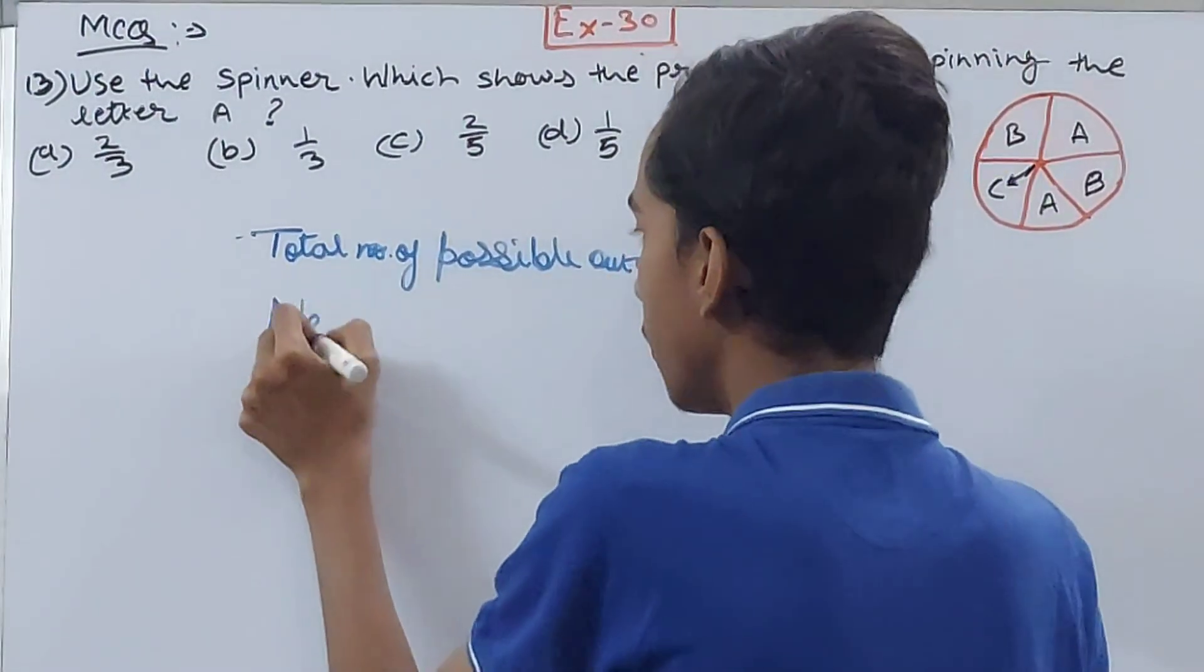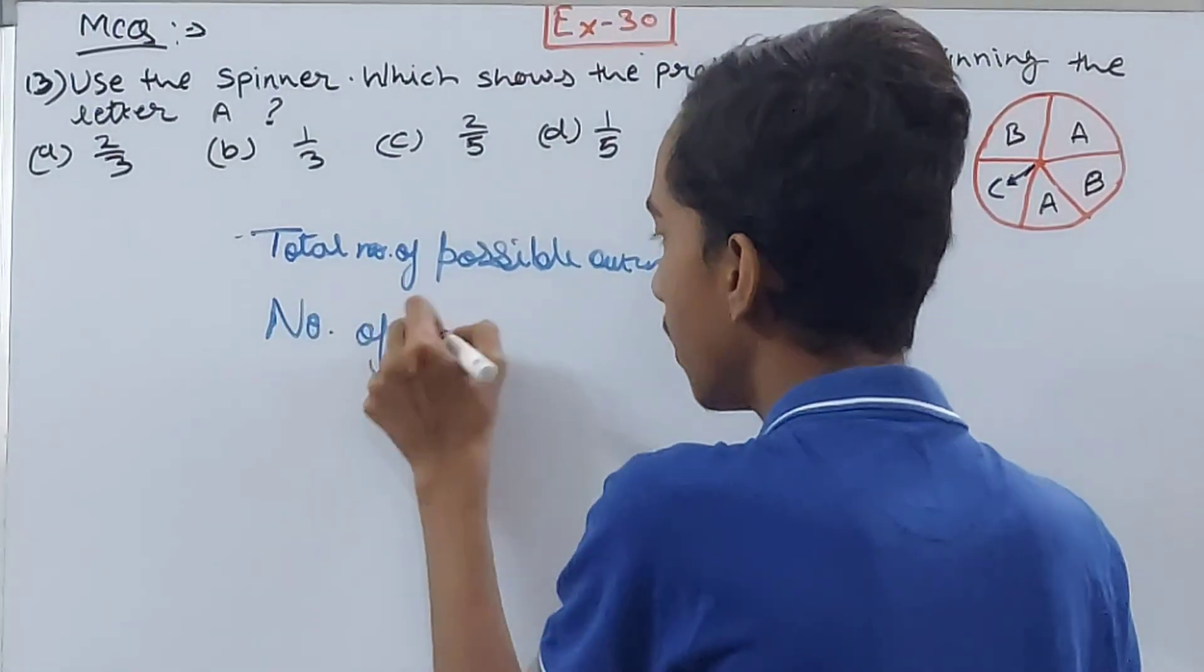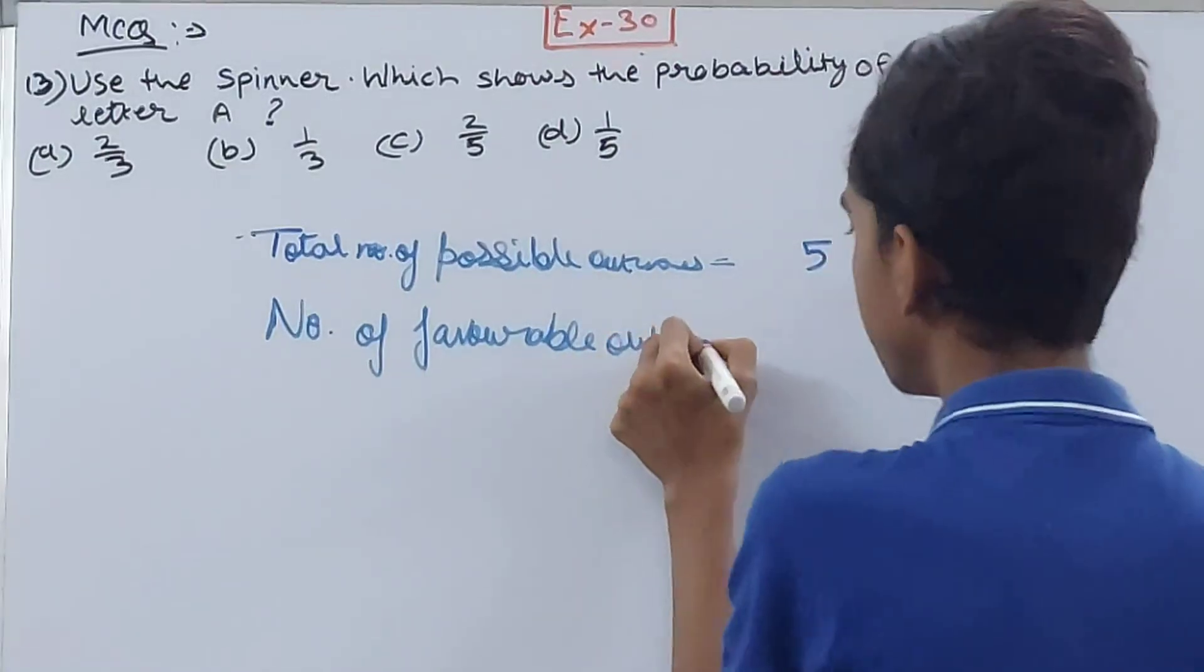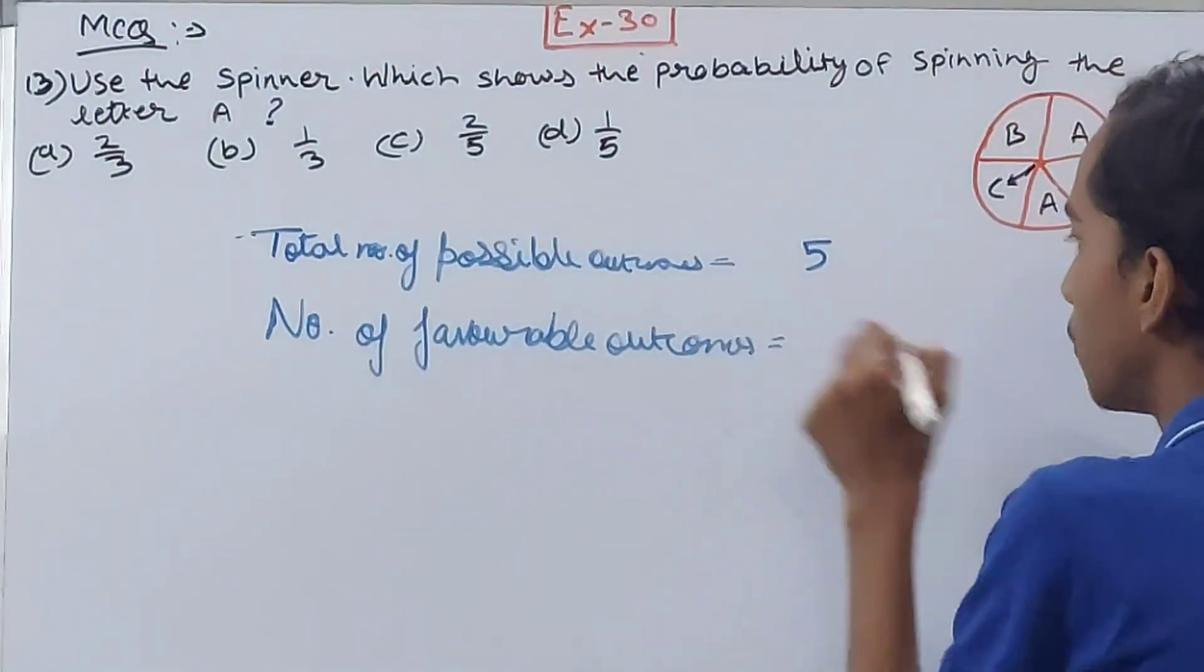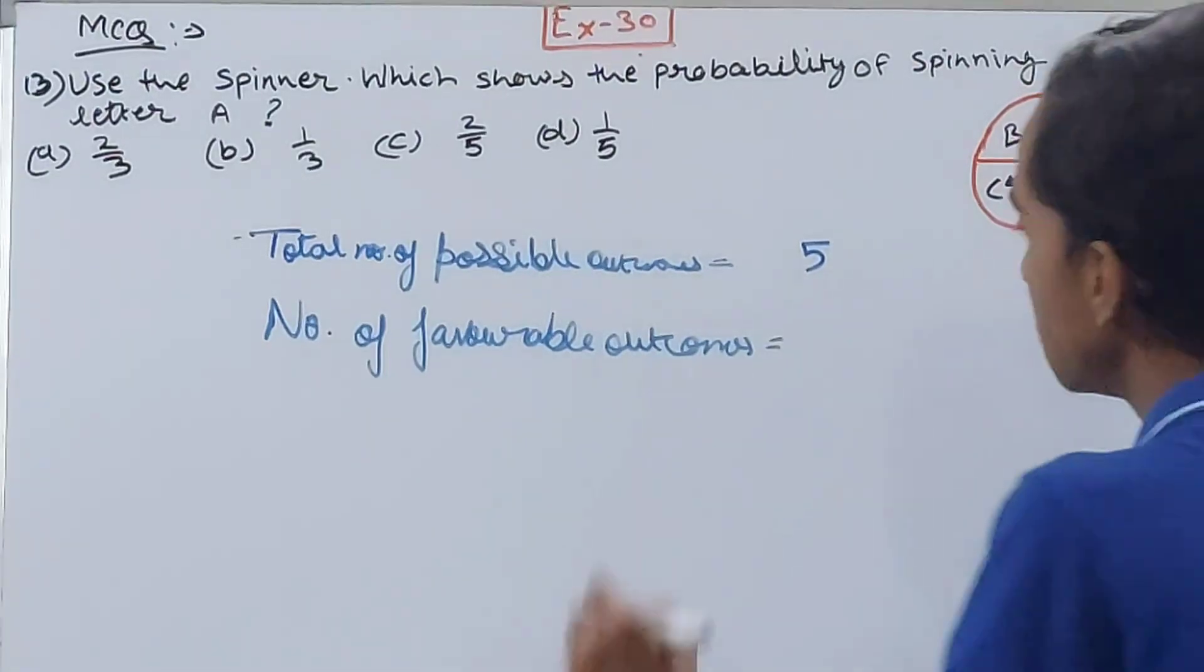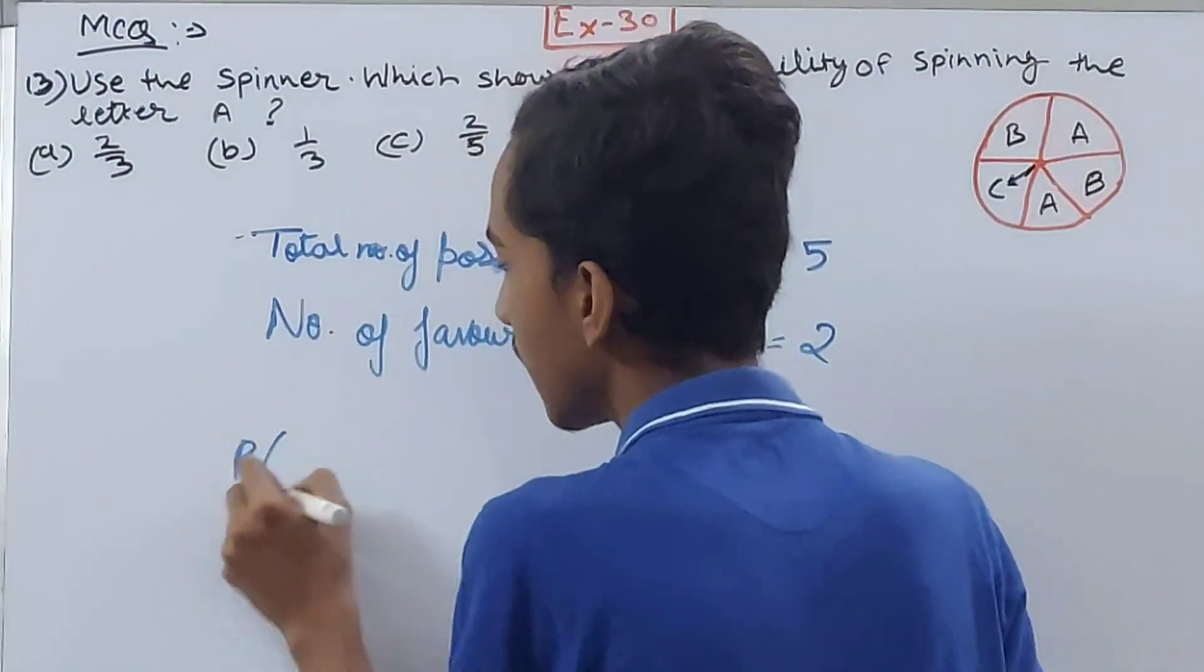Now, number of favorable outcomes. What is the favorable outcome? How many times is A coming on the spinner? Fine. What will that be? A, A, right? So two times it is coming. So two.